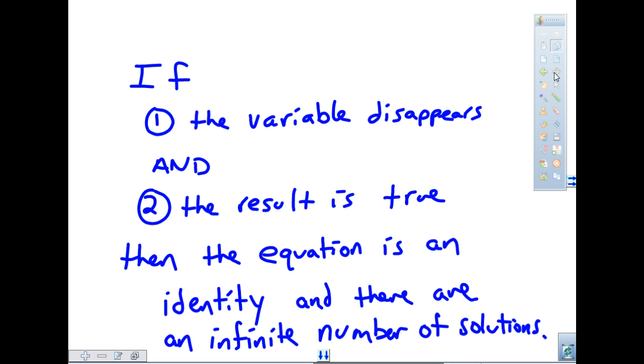So to summarize, if the variable disappears and the result is false, there is no solution and the equation is inconsistent. If the variable disappears and the result is true, then the equation is an identity, and there are an infinite number of solutions to that equation.